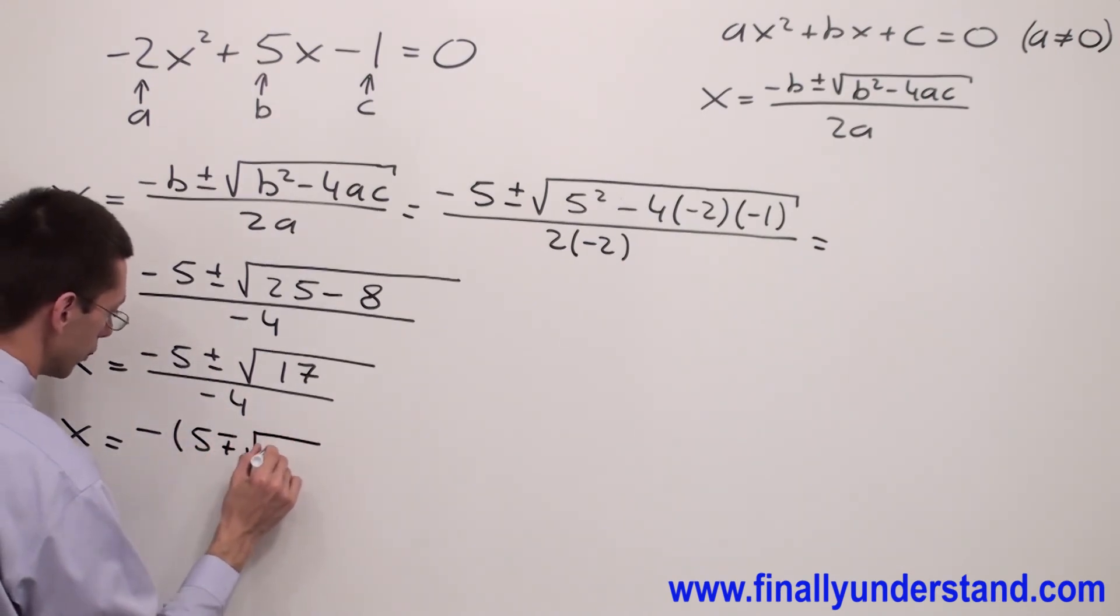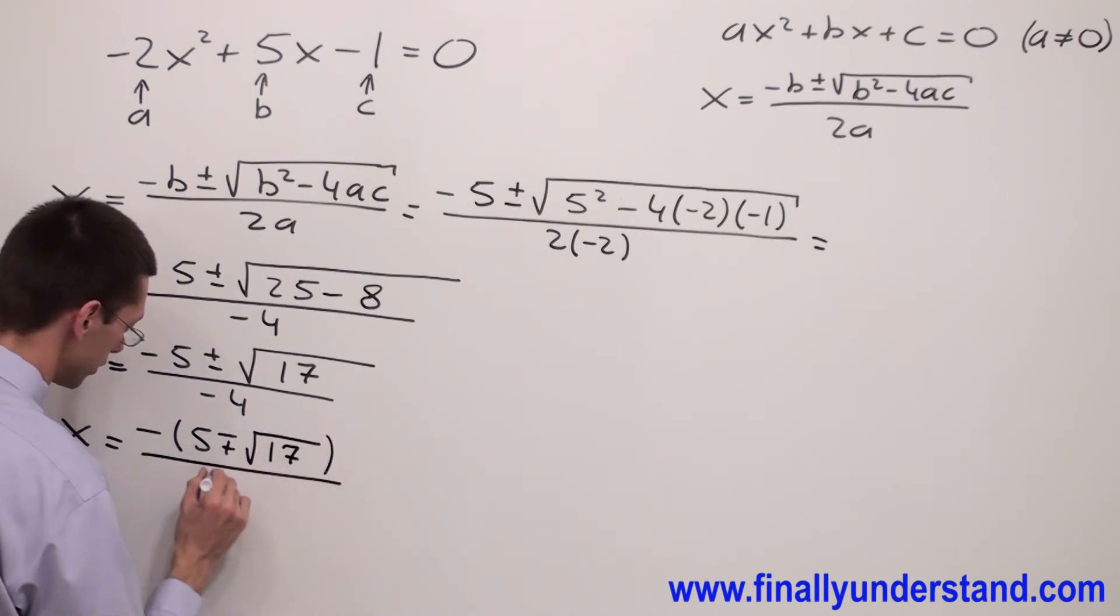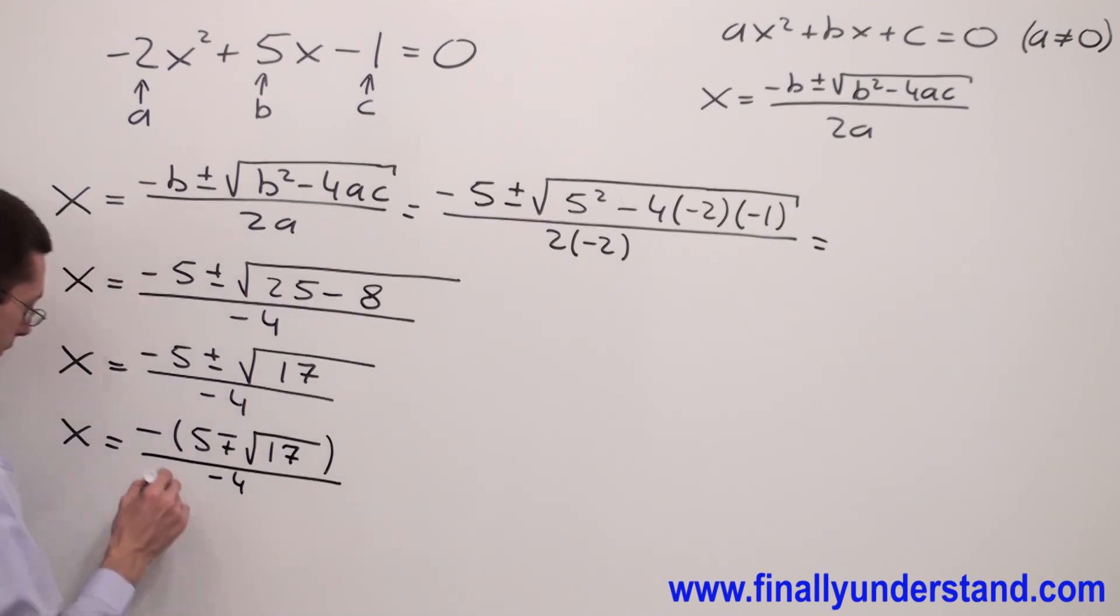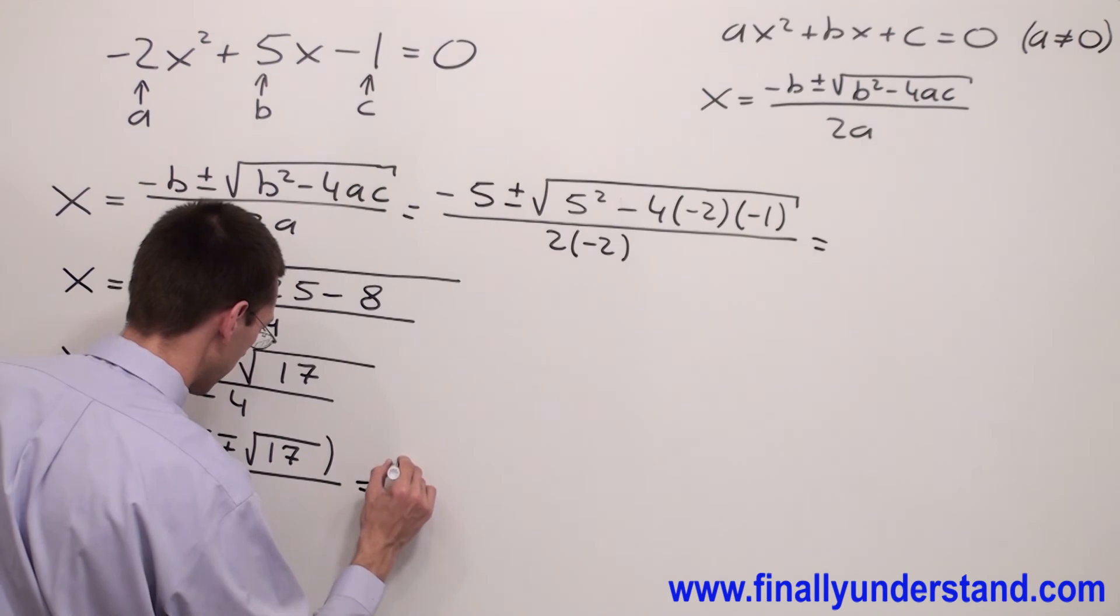Negative and negative will cancel out and you will end up with 5 plus minus square root 17 over 4.